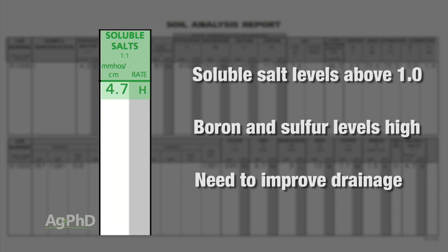They say that magnesium raises soil pH about 1.6 to 1 compared to calcium. Sodium, on the other hand, raises soil pH roughly 4 to 1 compared to calcium.